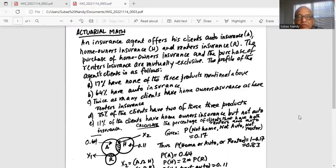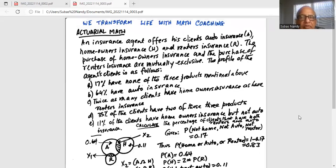An insurance agent offers his clients auto insurance, which I call A, homeowner's insurance, which is H, and renter's insurance, R. The purchase of homeowner's insurance and the purchase of renter's insurance are mutually exclusive. That means they do not happen at the same time. The profile of the agent's clients are as follows.